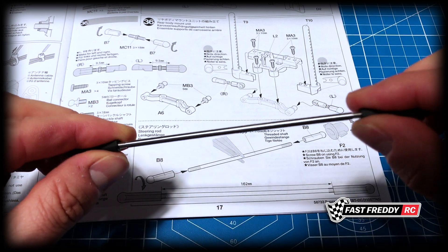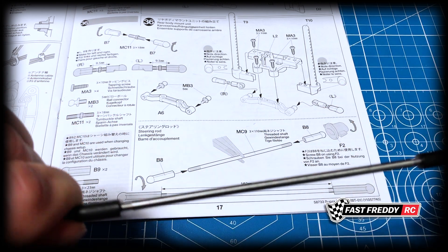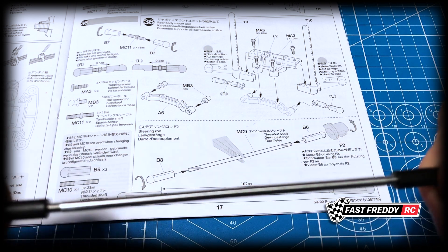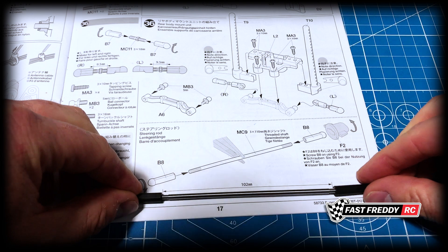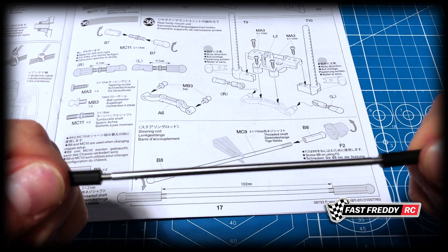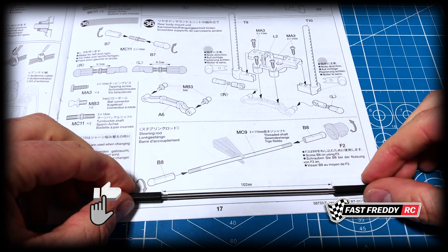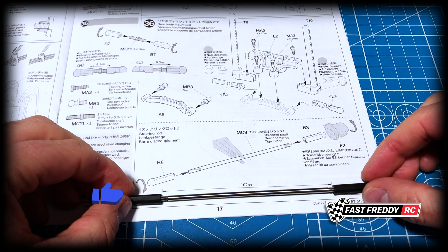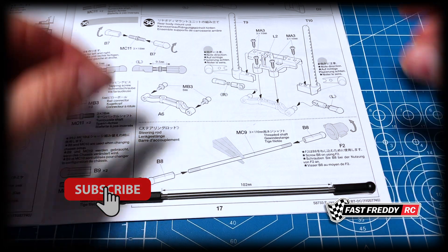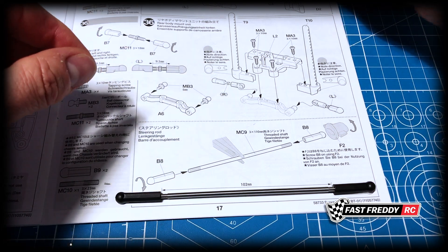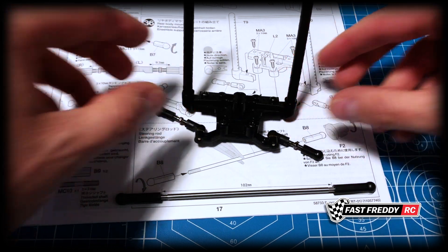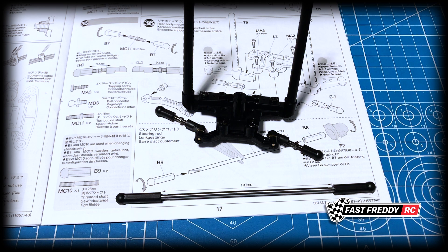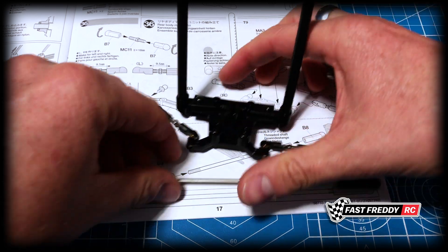There we go, now it's matching on both sides. Put this down onto here and we've got the 102. I might actually turn it out just a touch more. Yeah, that's a perfect match right there. So there is our steering arm and there is our rear body mount unit.